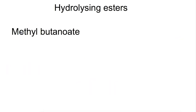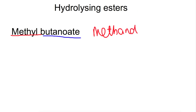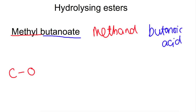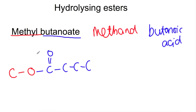When hydrolysing esters, we use water to split them back into the parent alcohol and parent carboxylic acid. For methyl butanoate: we draw the ester with C attached to O, attached to C=O, with four carbons on the carboxylic acid side. To split it into methanol and butanoic acid, we find the oxygen and the carbon with the double bond oxygen and split there.